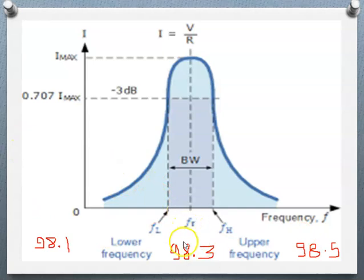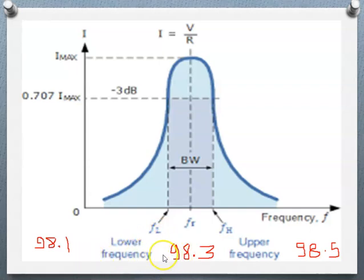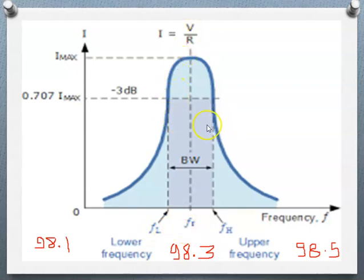The bandwidth and quality factor are interrelated. If we want better quality audio from the radio station, we adjust the frequency nearer to 98.3 MHz. As we approach the resonant frequency more closely — for example achieving 98.2 or 98.25 MHz — the quality improves because the curve sharpens. As sharpness increases, the quality factor increases, but the bandwidth reduces. Better selectivity requires a smaller bandwidth.